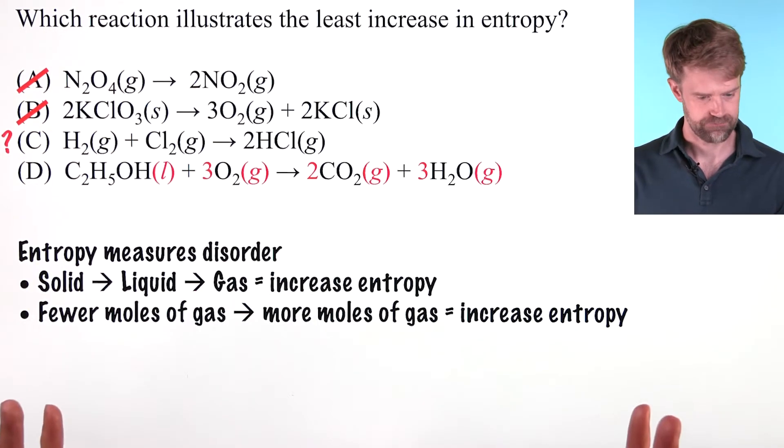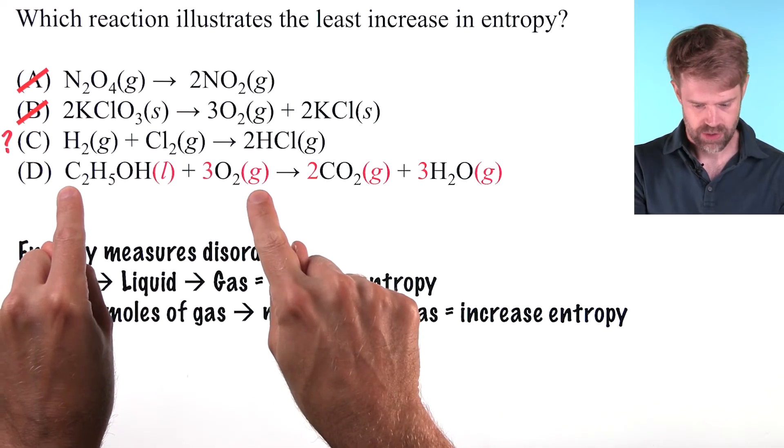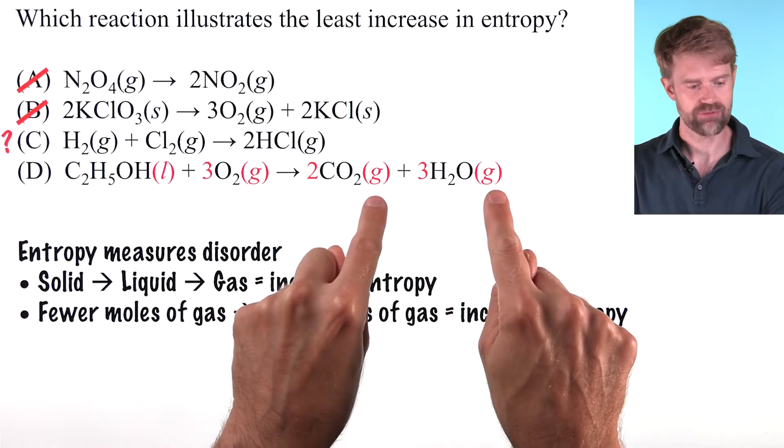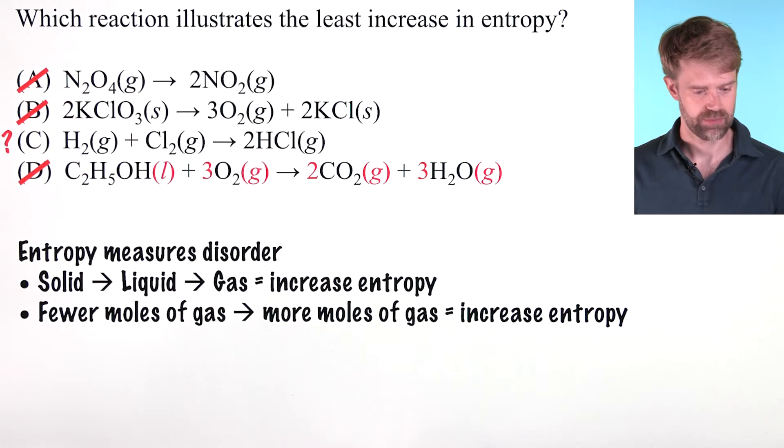Finally choice D. Here we have one mole of liquid, three moles of gas producing two plus three equals five moles of gas. So this is a definite increase in entropy.